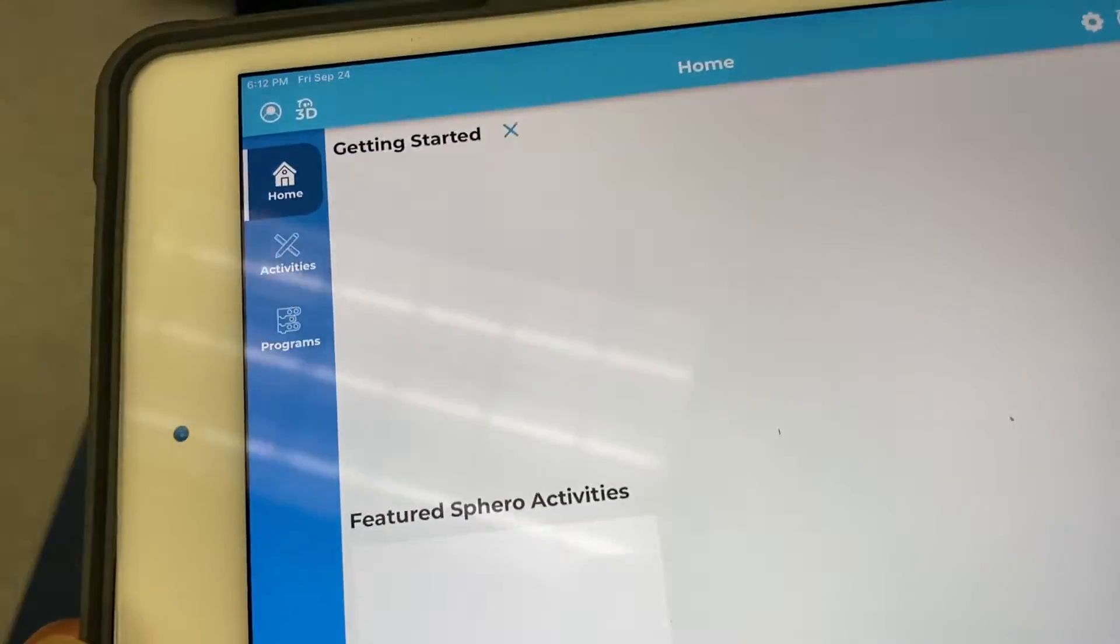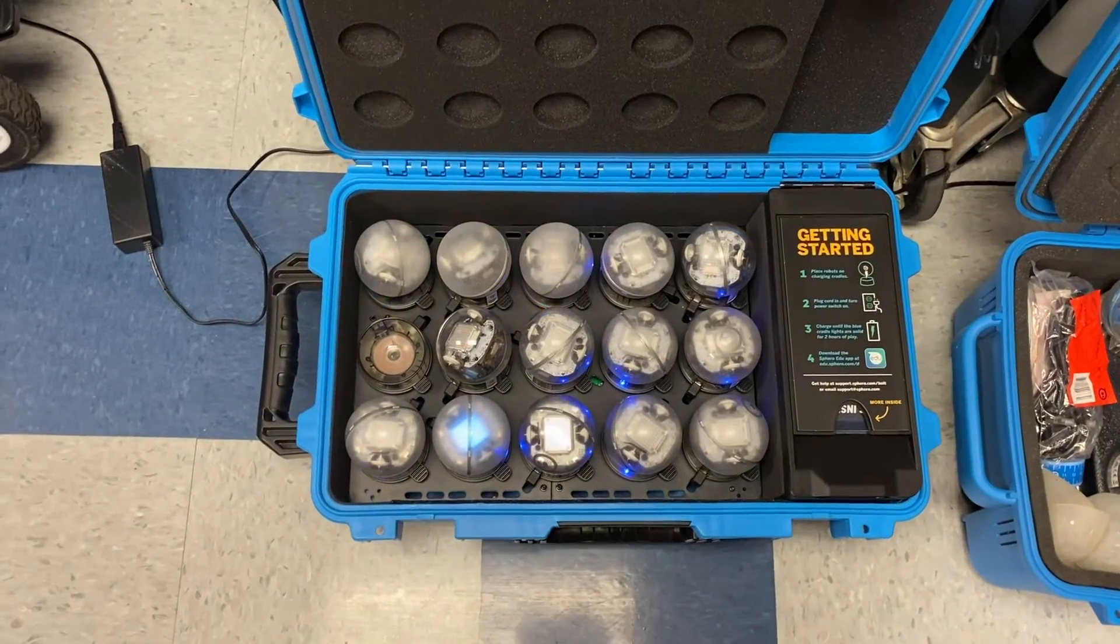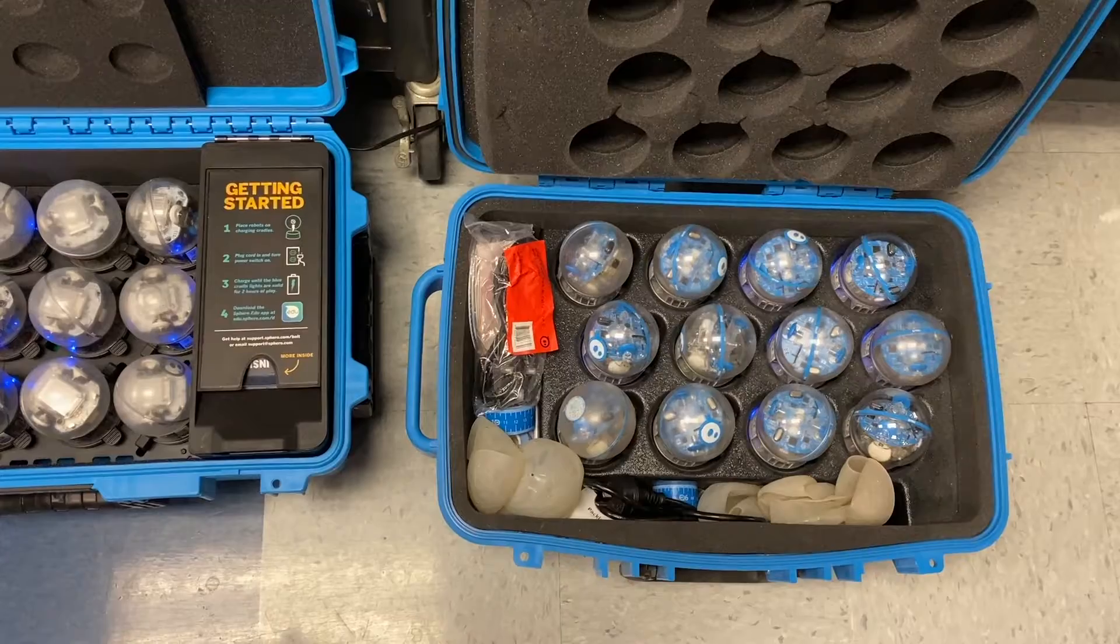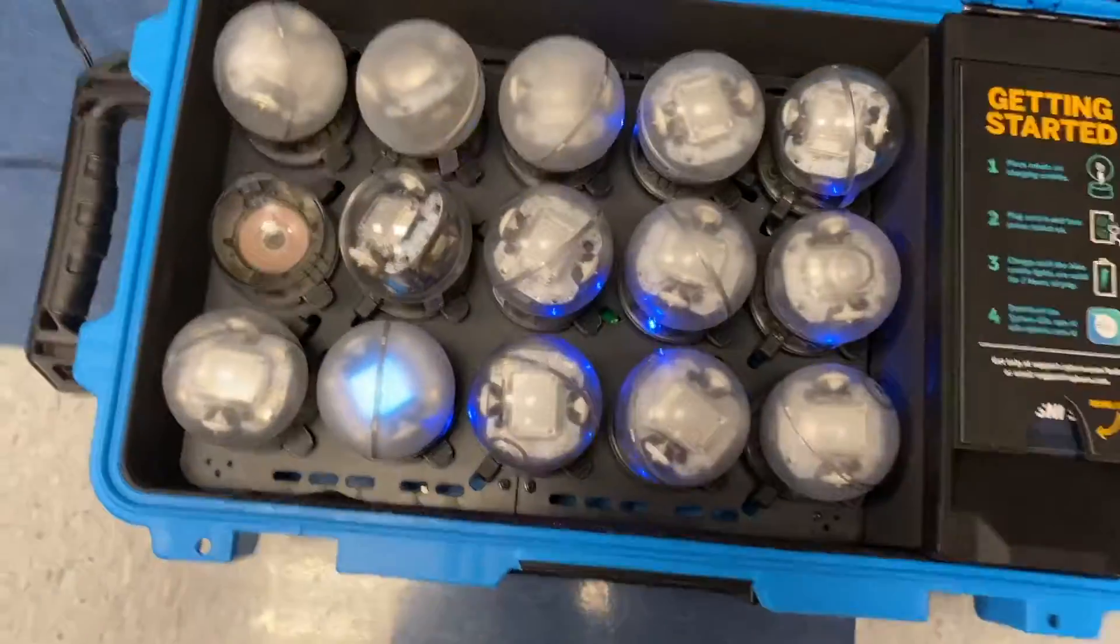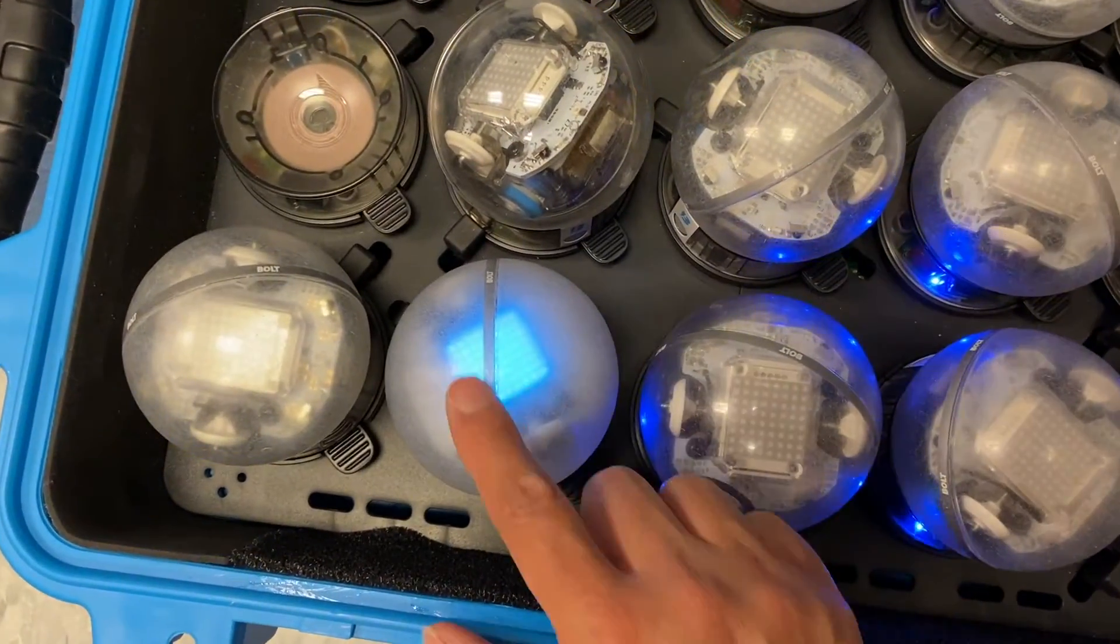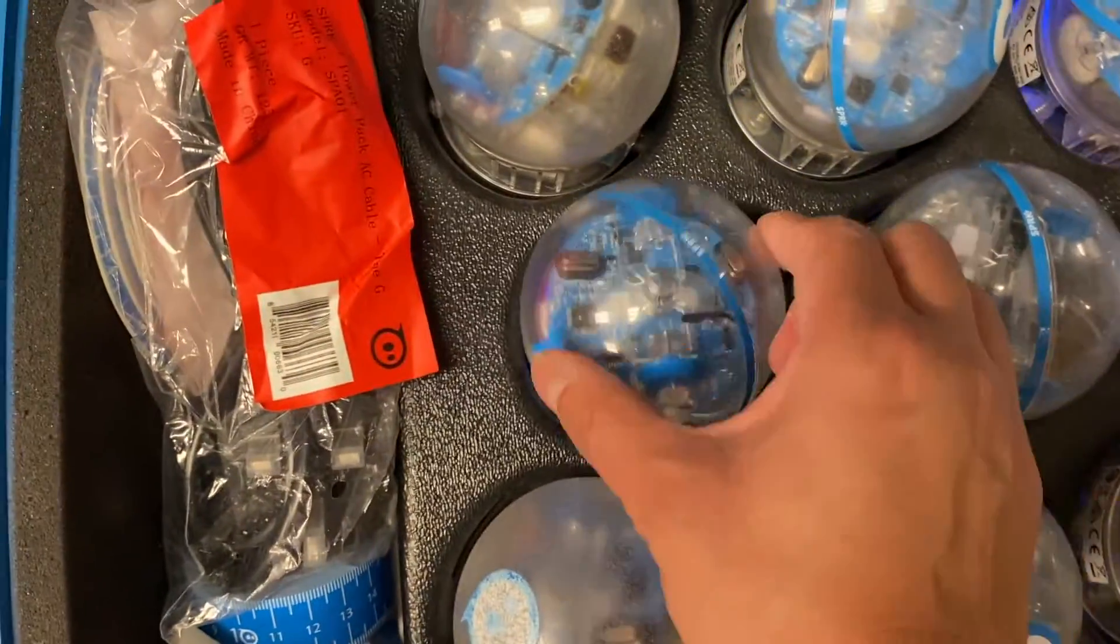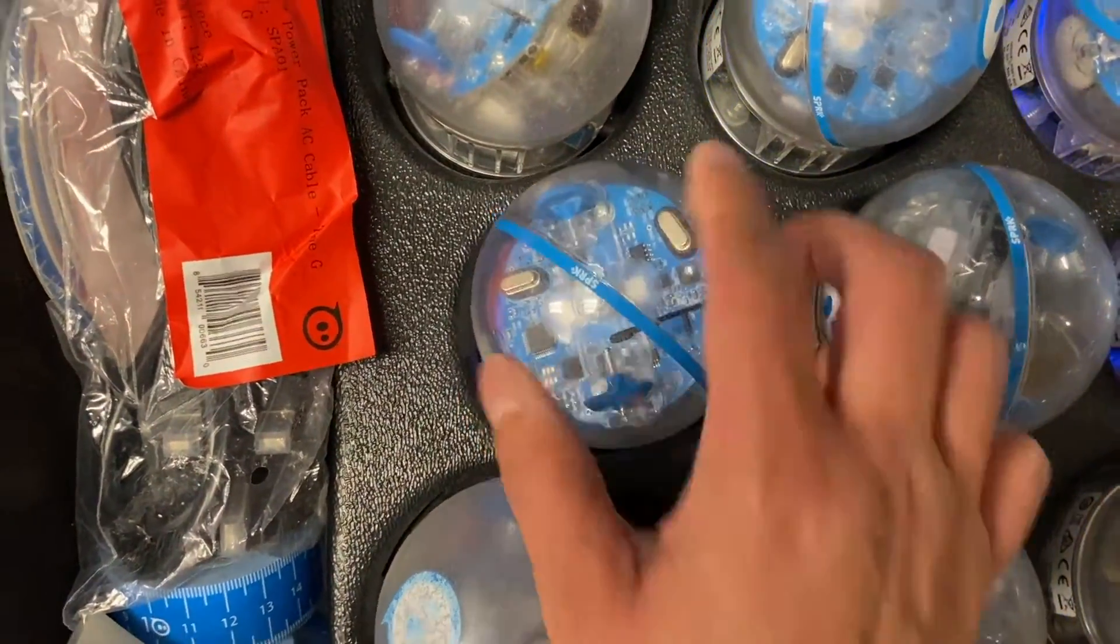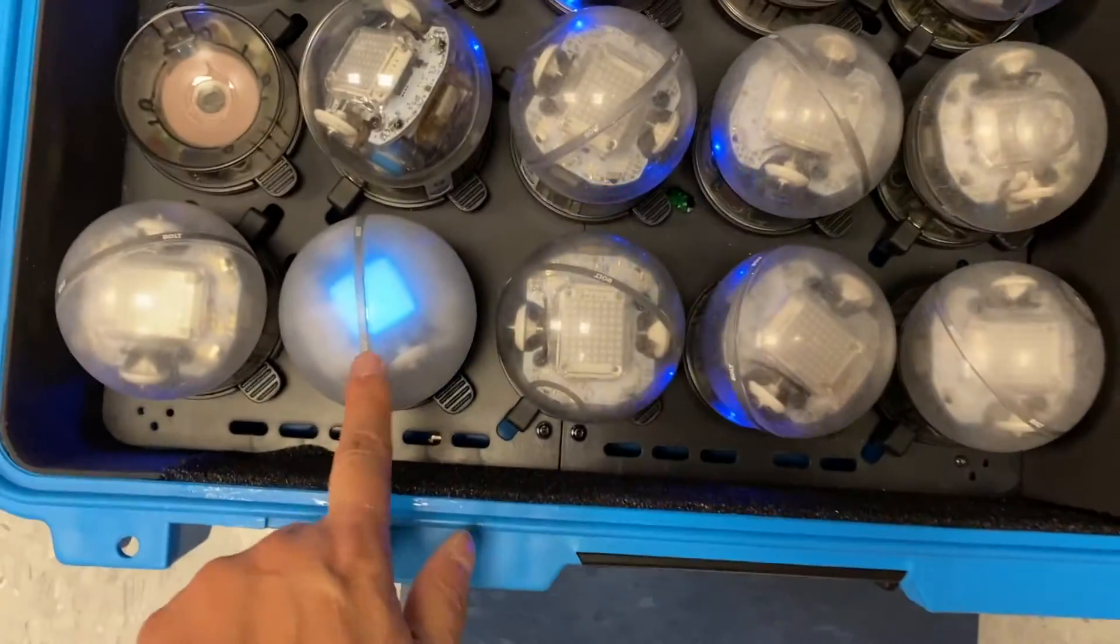These are the Bolts right here, these are the Bolts. Now we can also use the Spark, so those are the Spark and these are the Bolts. The Bolts have like a grid here, okay, and the Sparks won't, they won't have a grid. So that's how you can distinguish between both of them.